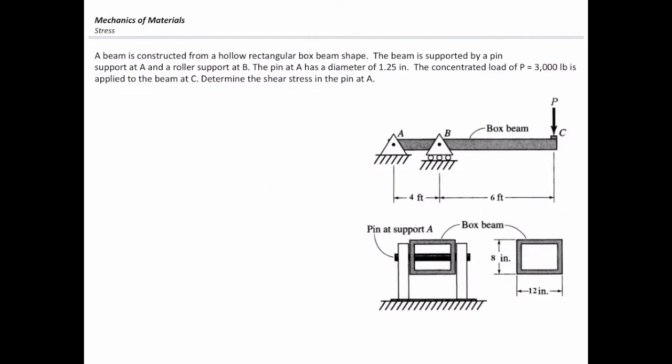A beam is constructed from a hollow rectangular box beam shape. The beam is supported by a pin support at A and a roller support at B. The support on the left side is a pin support and the middle part is a roller support.